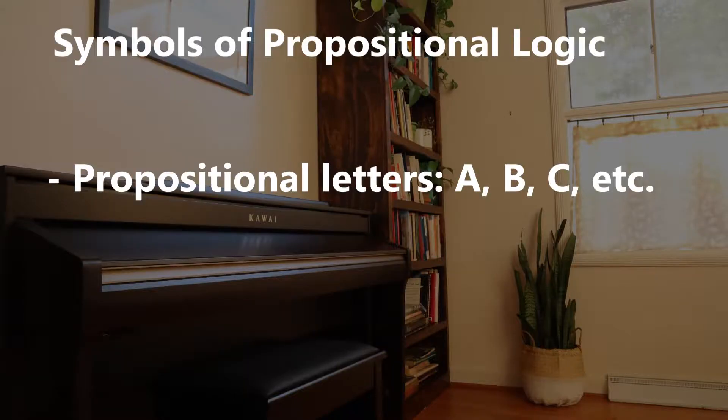In the case of symbols there are two types. There is what's called the non-logical vocabulary, and then there is what's called the logical constants or the logical vocabulary. The non-logical symbols are usually just called propositional letters, or sometimes sentential letters. They're just a bunch of uppercase letters — the letters of the alphabet A through Z — and if you need more you can subscript numbers to these letters, so you could have A sub 1, A sub 2, A sub 3, and so on.